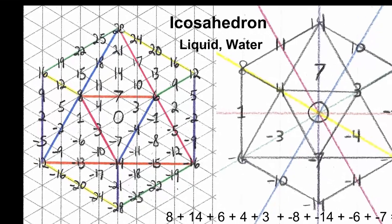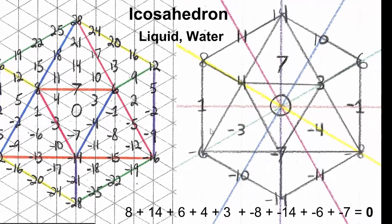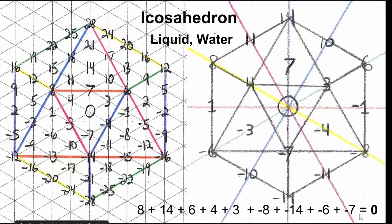The icosahedron counts by the same multiples as the octahedron, has more grid points, but when reduced to its smallest form, it also is an equation that equals zero.